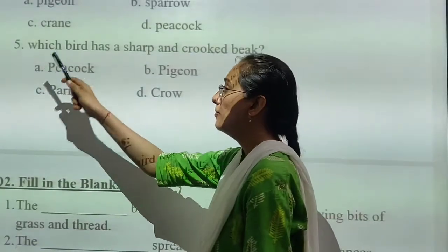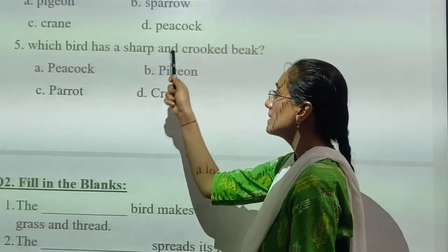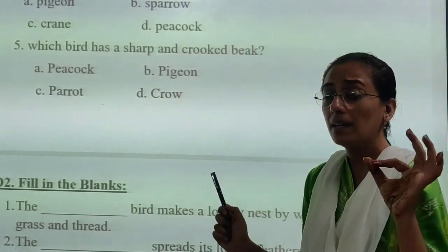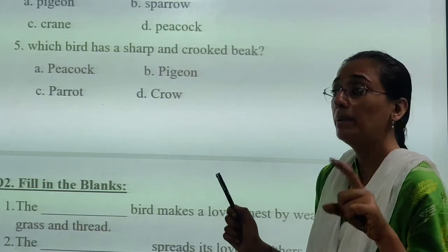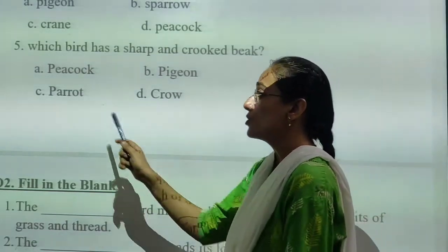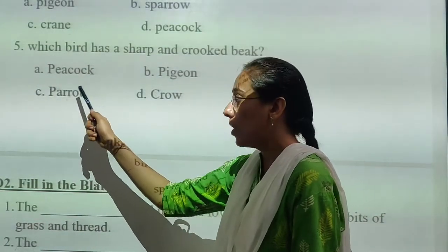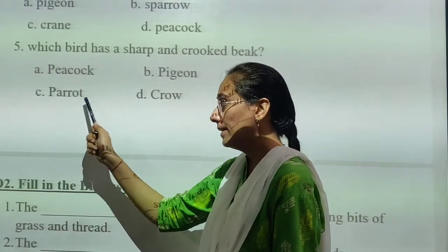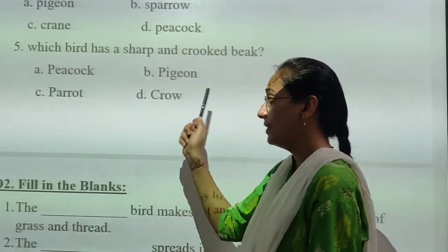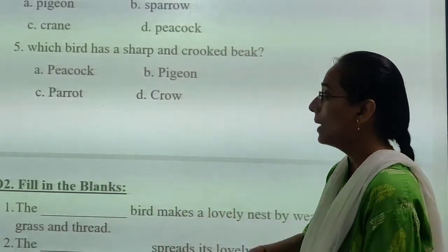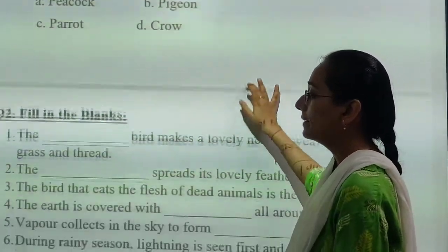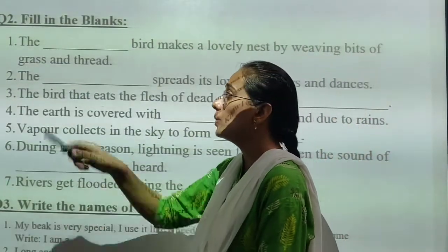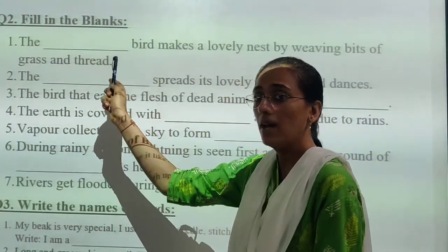Fifth: which bird has a sharp and curved beak, a little bit downward? Which bird has an extremely sharp and curved beak? The options are: peacock, pigeon, parrot, lapwing, or crow. You have to find the correct answer. Now section two is fill in the blanks.